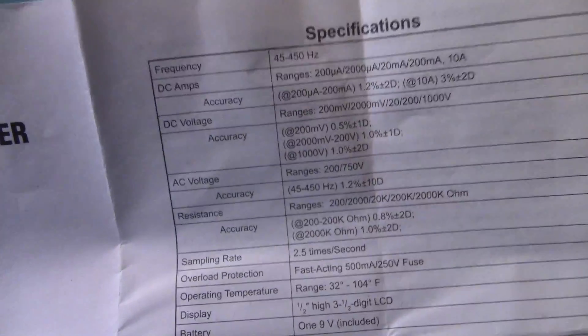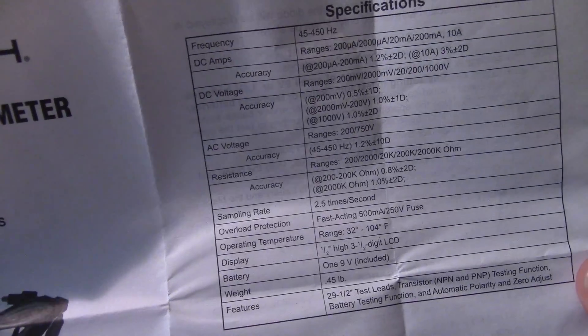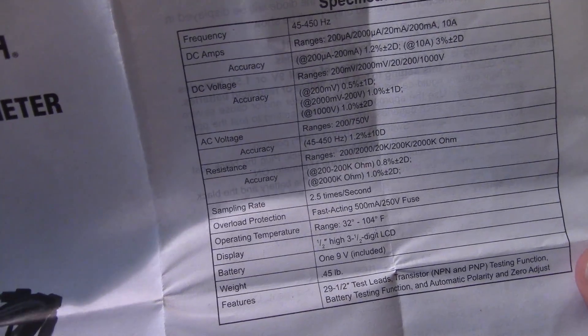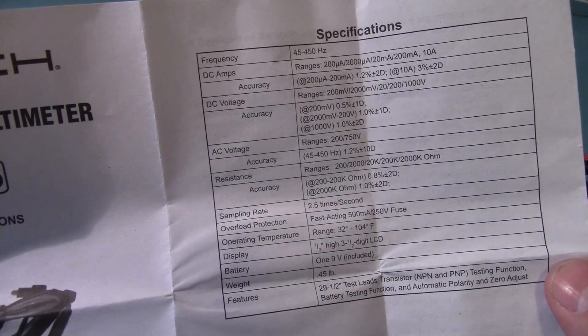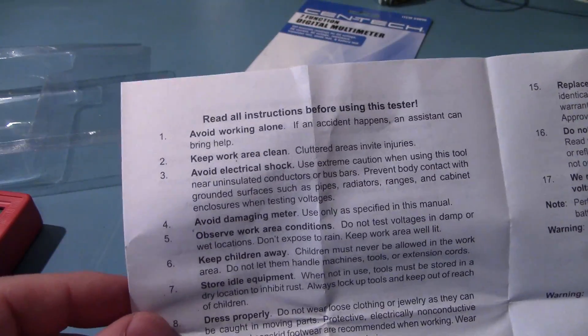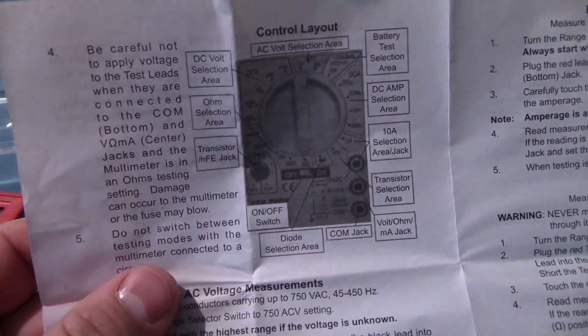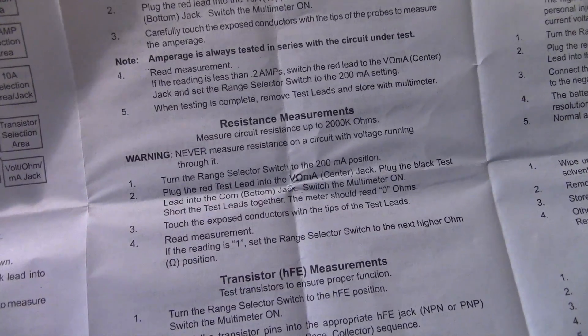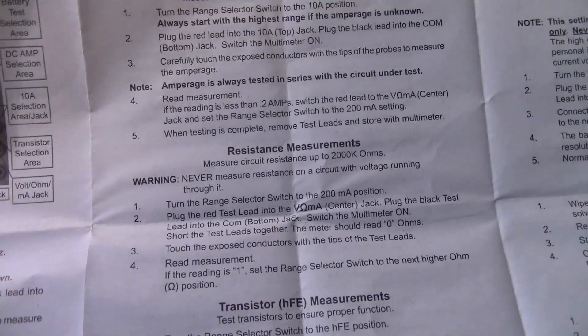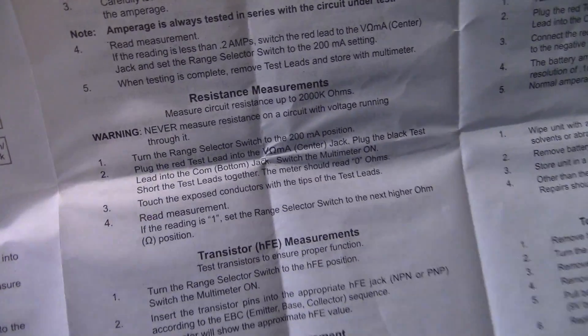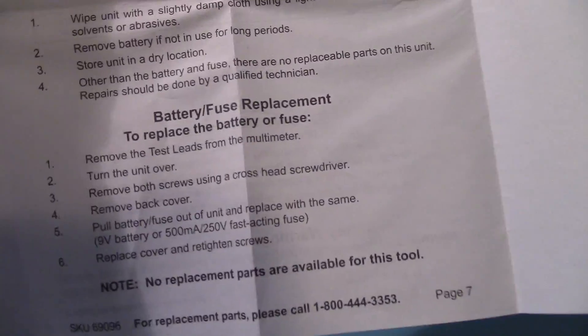It includes a 9-volt battery. You gotta wonder how they can even include a 9-volt battery on something that costs so little. Avoid working alone - that'll come in handy when the thing kills you. And yeah, we've got all the features. Never measure resistance on a circuit with voltage running through it. Apparently it does have a fuse.